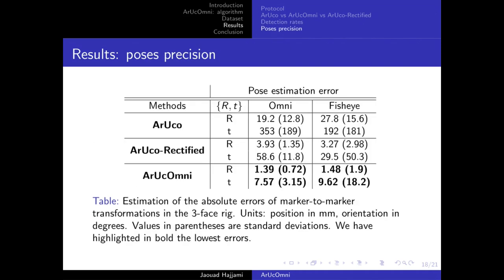In terms of pose estimation, ArUco Omni gets the smallest error. ArUco here is just for illustration purpose because the pose estimation is based on perspective projection, which is not adapted for panoramic images. Again, ArUco Omni outperforms the two methods with the lowest error in terms of orientation and translation for both catadioptric and fisheye images.